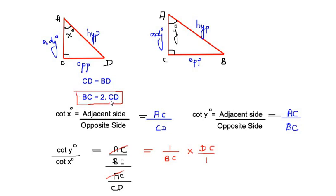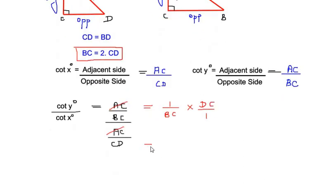Now here we have already seen that BC is written as 2 times CD, or 2 times DC. So substituting the value here, we have 1 over 2 times DC multiplied with DC. So now cancelling the DC off, we are left with 1 over 2.